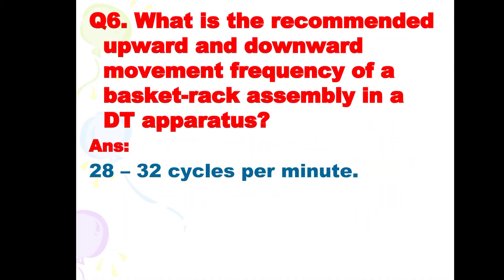Next is: what is the recommended upward and downward movement frequency of a basket rack assembly in a DT apparatus? The answer is: 28 to 32 cycles per minute.